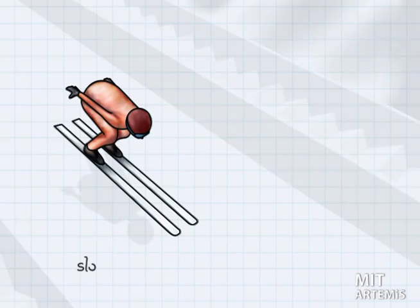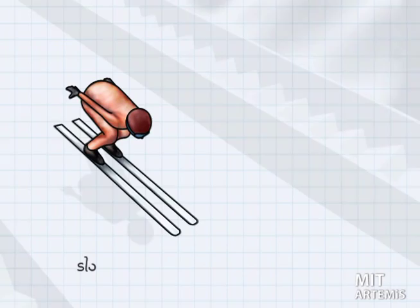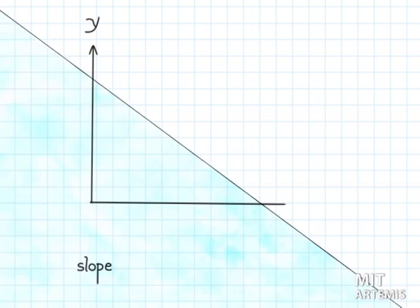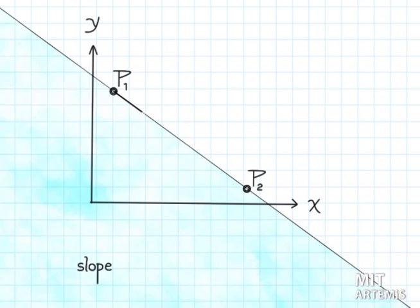The mathematical concept of slope is defined in a two-dimensional coordinate system for a line. Pick any two points on the line. Measure the horizontal and vertical displacement of the second point from the first one. The slope is defined as the ratio of the vertical displacement over the horizontal.